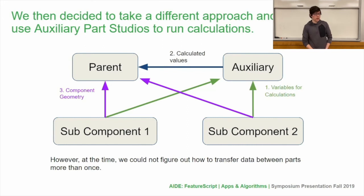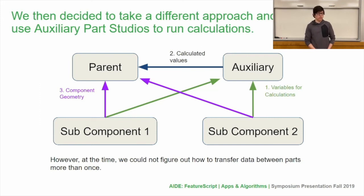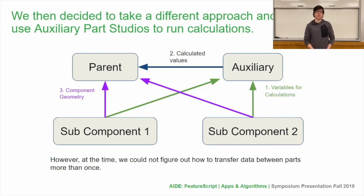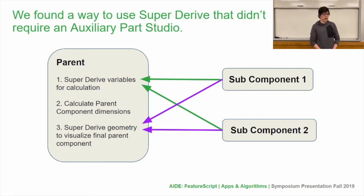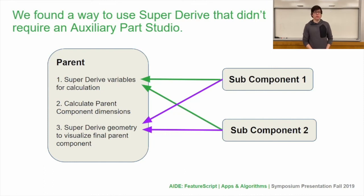We designed an auxiliary Part Studio to run calculations, which required creating an extra auxiliary Part Studio that would SuperDerive variables from the two subcomponents. Within the auxiliary Part Studio, it would calculate certain values based on those variables and send them to the parent component. The parent component would then SuperDerive the component geometry from the subcomponents. However, we actually realized we didn't need this auxiliary Part Studio — we could simply, within the parent component, SuperDerive the variables needed for calculation from the subcomponents, and the parent component could calculate them within its own Part Studio. Finally, it would SuperDerive the geometry of the subcomponents.